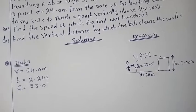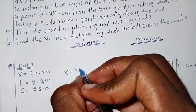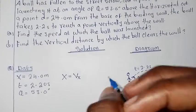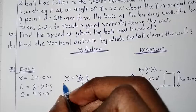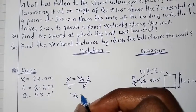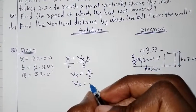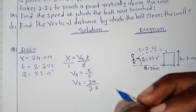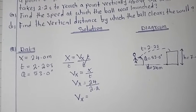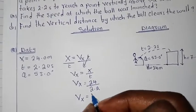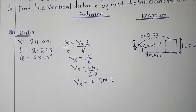We know that the range is given by Vx — the velocity in the x — multiplied by the time. So we have to find the velocity in x over the time of flight. Vx equals x over t, so Vx equals 24 over 2.2 seconds. If you divide everything, you get approximately 10.9 meters per second. So we have calculated the velocity in the x-axis.